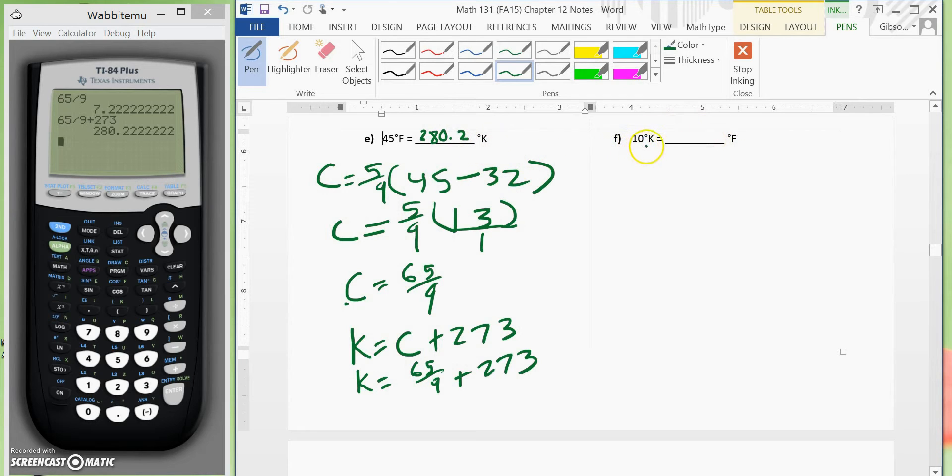Now, we go to F. We have 10 degrees Kelvin is equal to 11 degrees Fahrenheit. So let's go back here. The first thing we will do is change kelvins to Celsius.